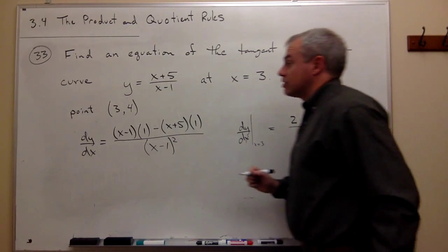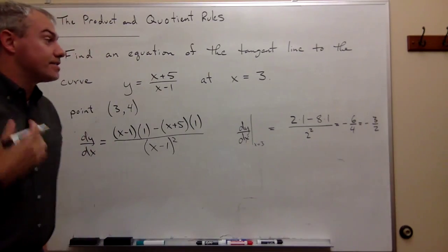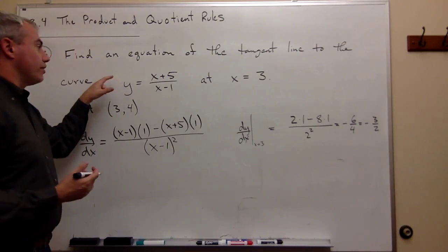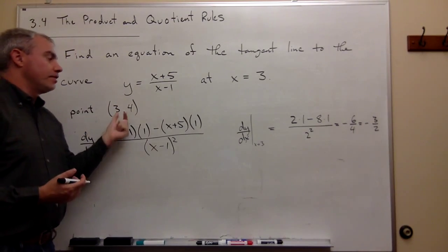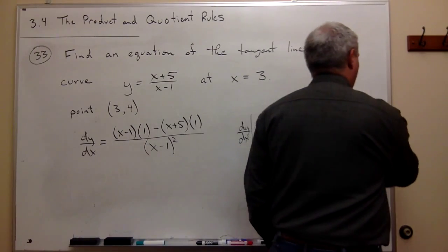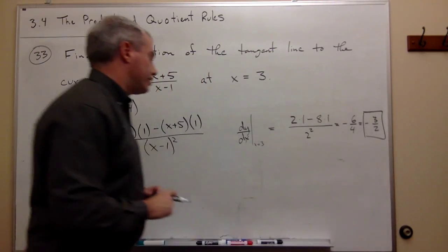So that is my slope. I got a point by plugging into the original equation. I plugged into the derivative equation and got my slope, which is minus 3 over 2.